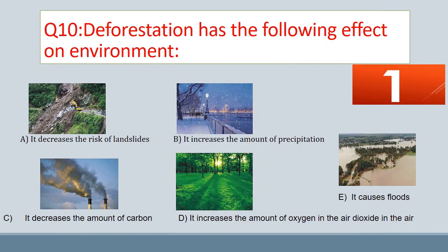Question No. 10. Deforestation has the following effect on the environment. A. It decreases the risk of landslides. B. It increases the amount of precipitation. C. It decreases the amount of carbon dioxide in the air. D. It increases the amount of oxygen in the air. E. It causes floods.